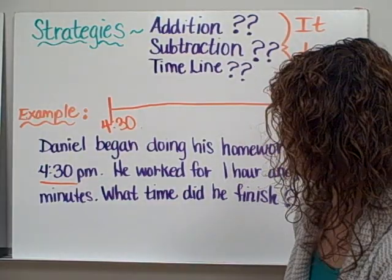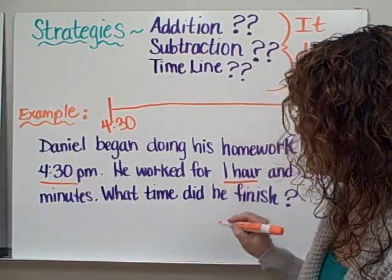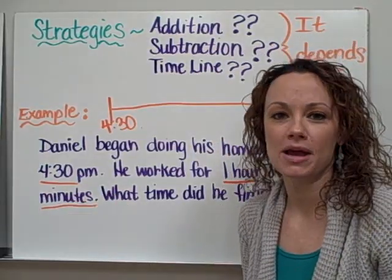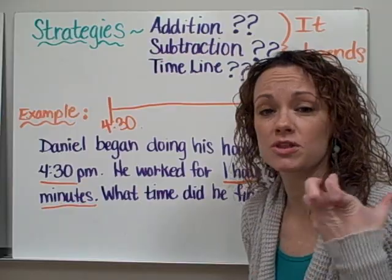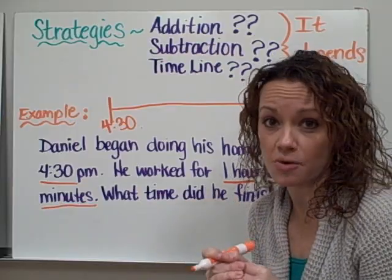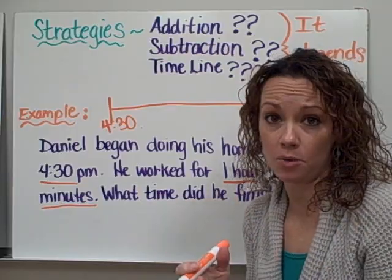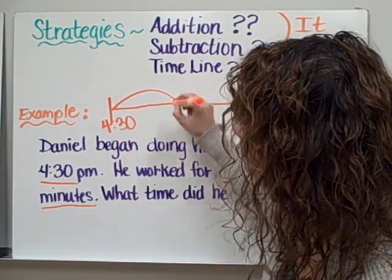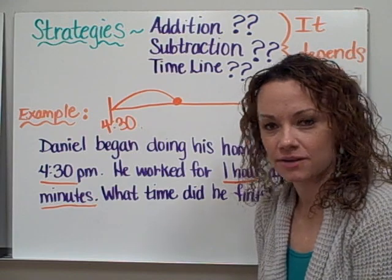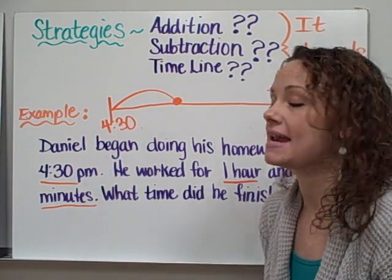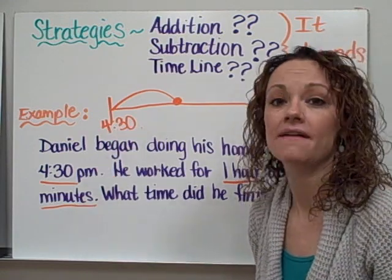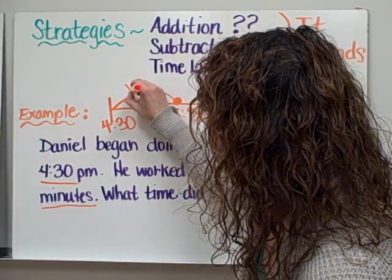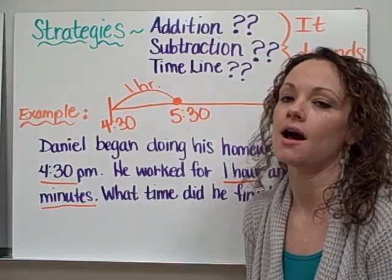What else do we know from our word problem? We know that he worked for 1 hour and 35 minutes. The easiest way to work with a timeline is to work with the largest chunk of time first, which would be hours. So we know that if we jump an hour and we've started at 4:30, an hour later would be 5:30. So I'm going to label after 1 hour has gone by: 5:30.